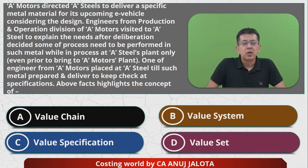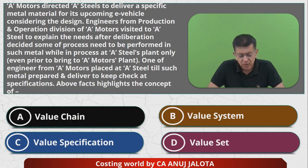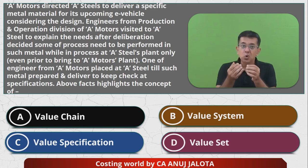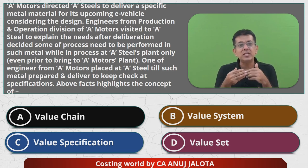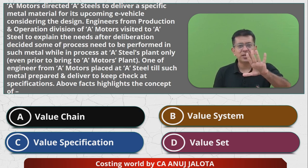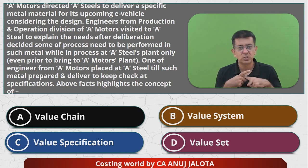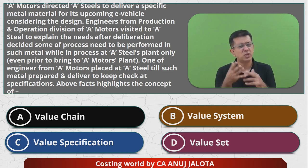Value chain is basically within your own organization where you keep on doing activities and each activity adds some value — that is called a value chain. You have five primary activities and four secondary activities. The primary activities are inbound logistics, operations, outbound logistics, marketing and sales, and after-sales service. The four secondary activities are procurement, firm infrastructure, technology, and human resources.